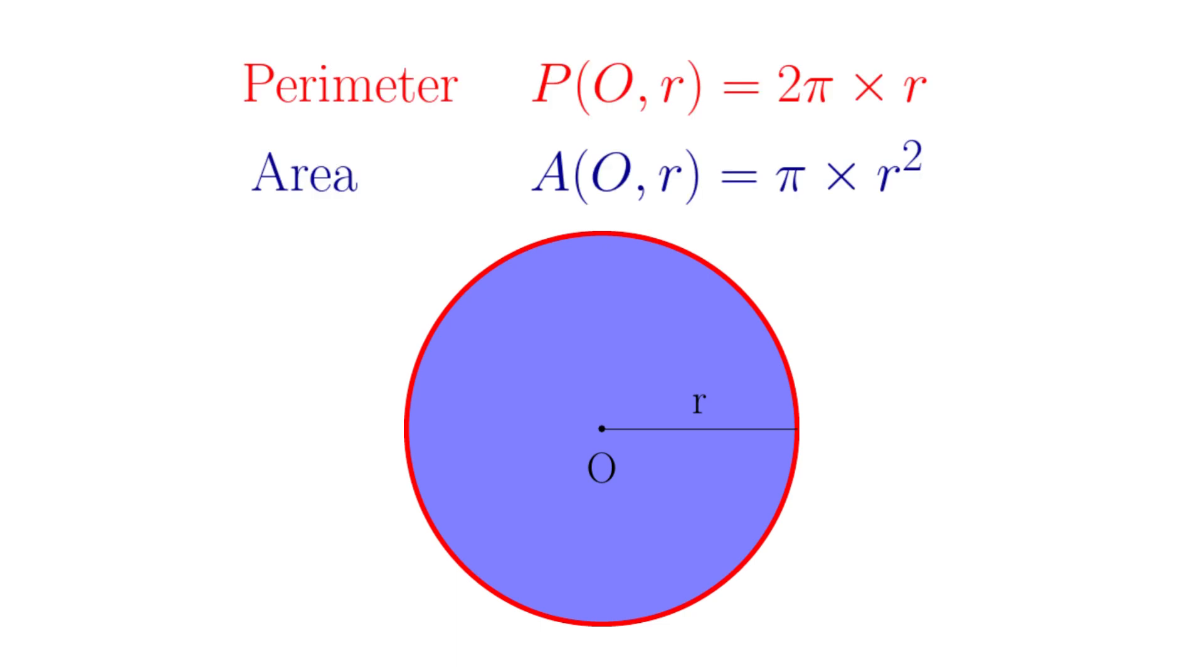Hello, welcome back to my channel. I'm sure that you have seen these formulae many times. Those are to calculate the perimeter and the area of a circle, given its radius.